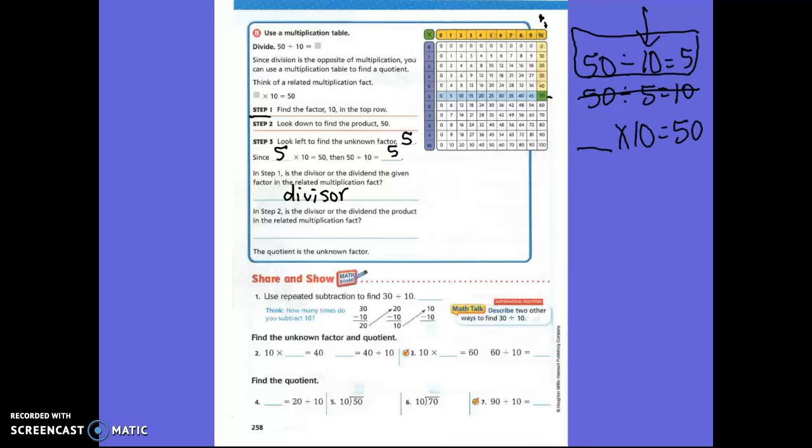Then, in step two, you look down to find the product fifty. And step two, is the divisor or the dividend a product? Fifty. Is that the divisor or the dividend? The dividend. And the quotient is the unknown factor. So, five was the quotient, which is the unknown factor.